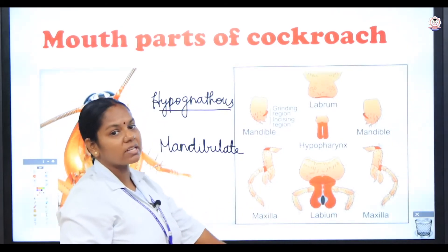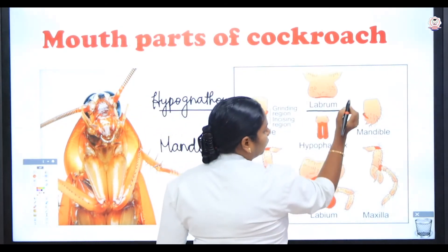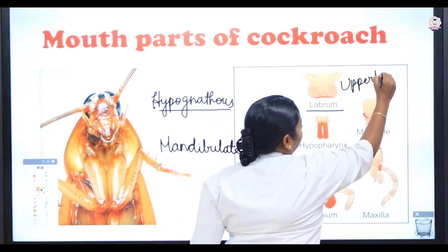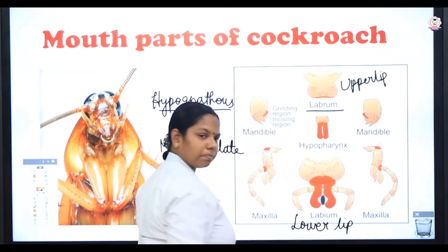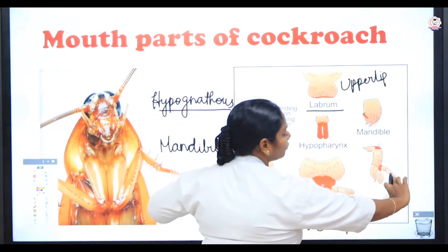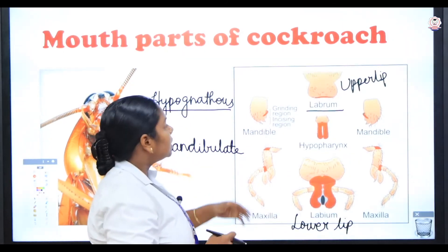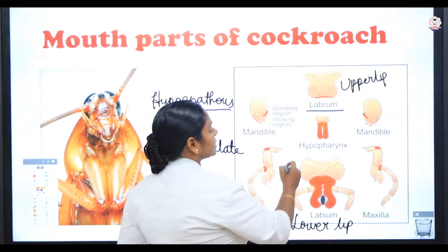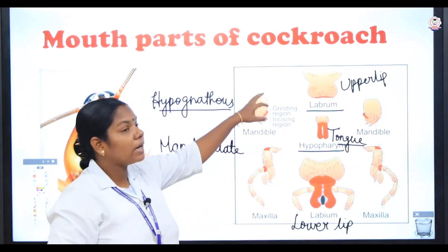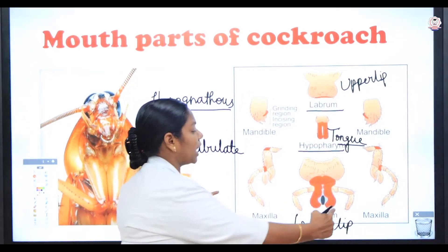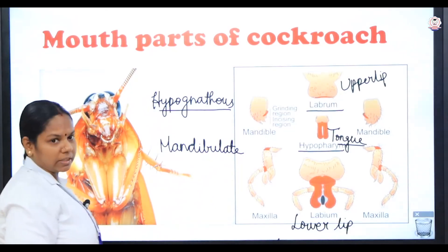This is an important three-mark question — you may be asked to draw and label the mouth parts of the cockroach. The mouth parts are: the upper lip called labrum, the lower lip called labium, a pair of maxillae, a pair of mandibles used for cutting and chewing food, and a small tongue called hypopharynx. So the mouth parts of the cockroach include labrum, labium, a pair of maxillae, a pair of mandibles, and hypopharynx.